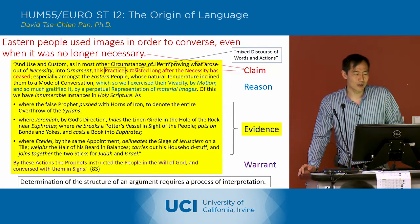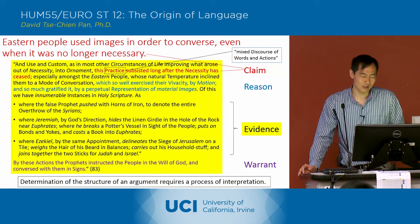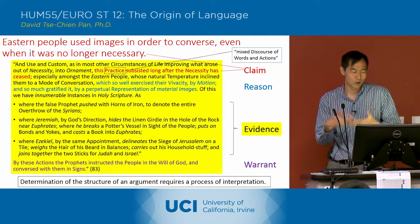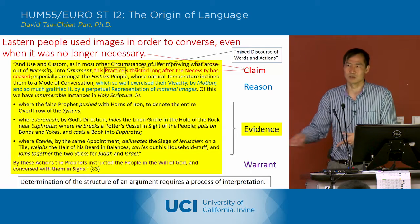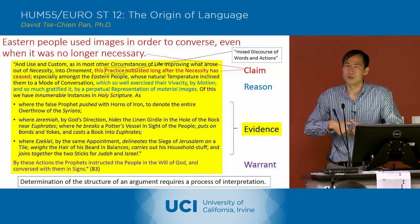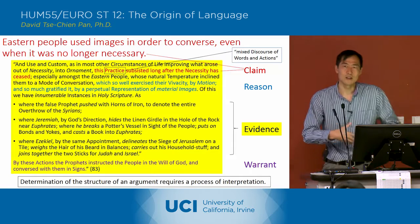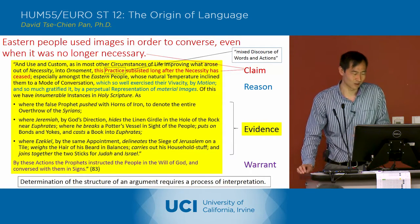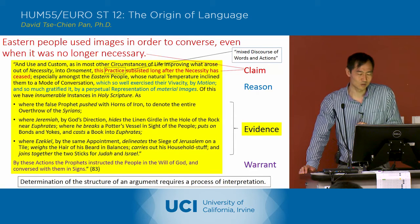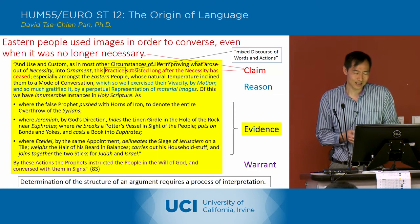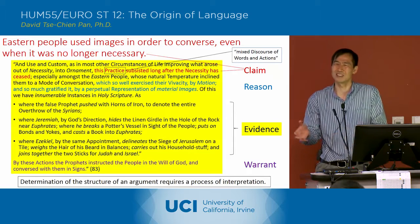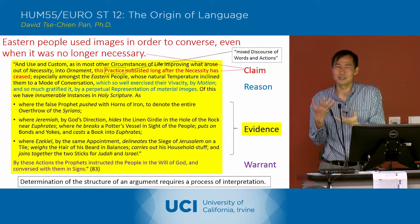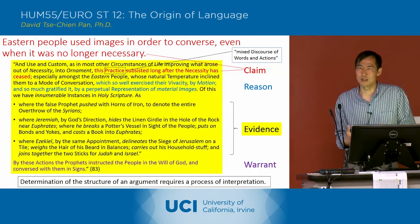Then there's another example: 'where Jeremiah, by God's direction, hides the linen girdle in the hole of the rock near Euphrates, where he breaks a potter's vessel in sight of the people, puts on bonds and yokes, and casts a book into Euphrates.' These are all things Jeremiah does — hiding a girdle, breaking a potter's vessel, putting on bonds and yokes, casting a book into the Euphrates — he doesn't speak but carries out these actions to make a point. Finally, 'Ezekiel, by the same appointment, delineates the siege of Jerusalem on a tile, weighs the hair of his beard in balances, carries out his household stuff, and joins together the two sticks for Judah and Israel.' Again, these are actions the prophet carries out to illustrate a point. These are all examples of how actions are useful as a supplement to speech.